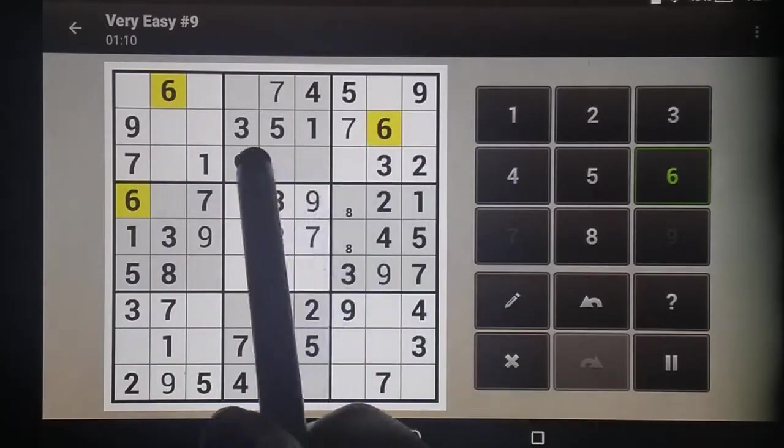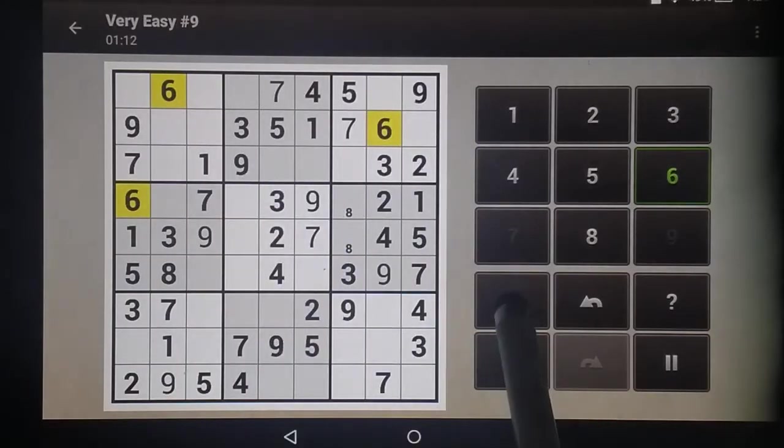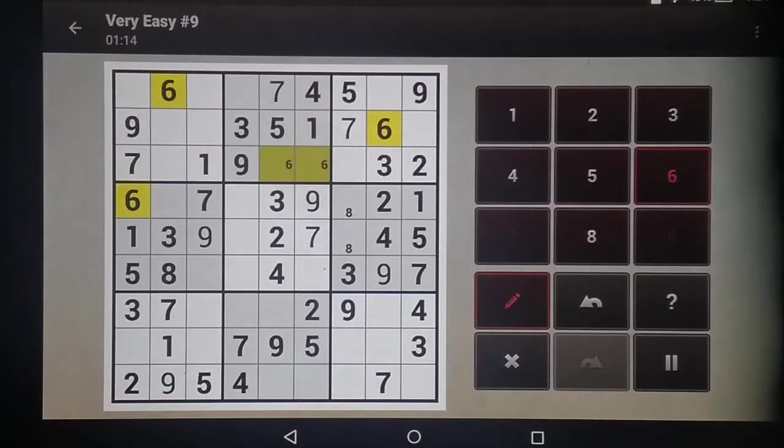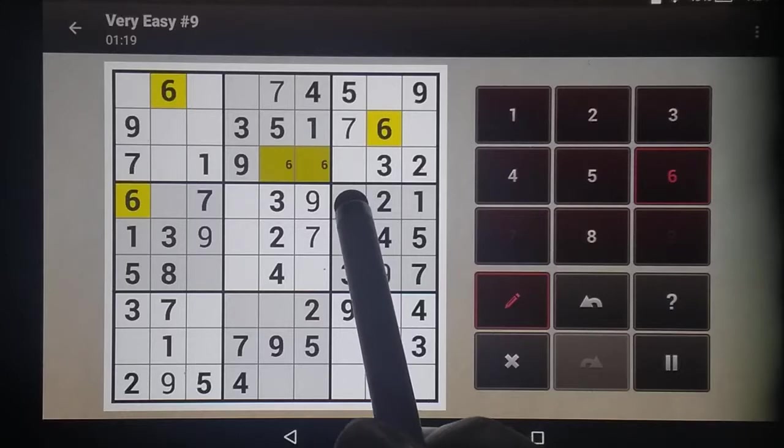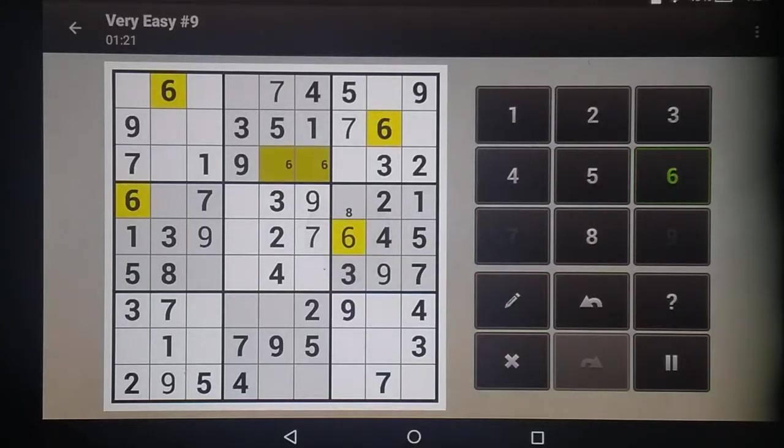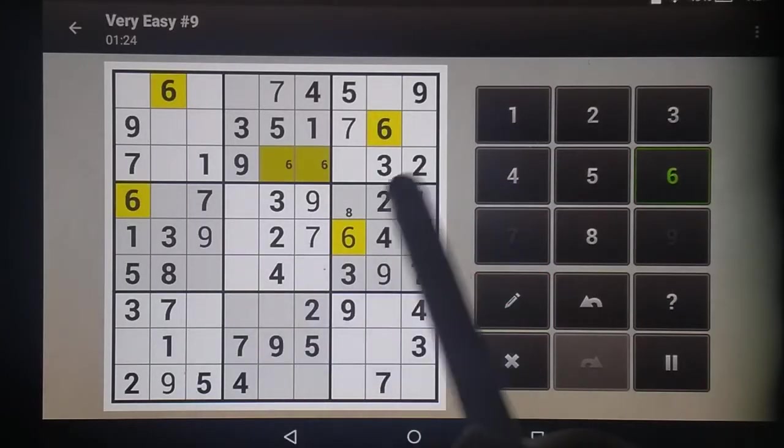This row is covered, but it could be in either one of those, so I'm going to put that 6 there. Now we're going to find out about that 8 because the 6 here is blocked, so this one has to be a 6, leaving only that one spot for the 8.